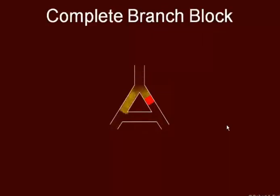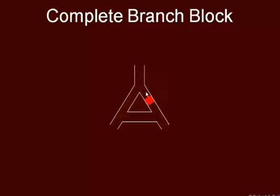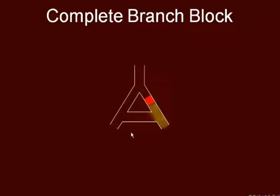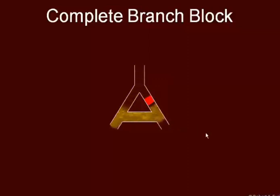In this example, I'm showing a complete branch block. An infarct could have destroyed some of the conductive tissue. So the signal comes down, it can't get through the block, comes back around, and eventually will reach all areas of the heart. This does not create a serious cardiovascular problem; however, it will move the mean electrical axis — in this case towards the left, because this is on the left branch.